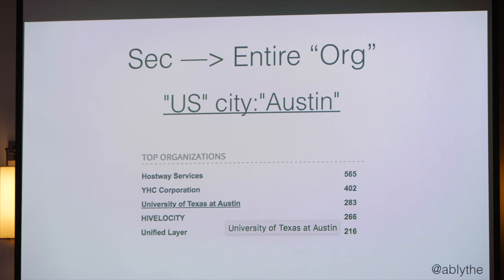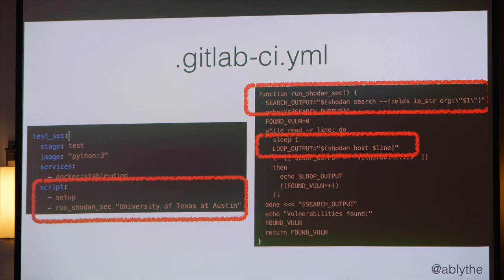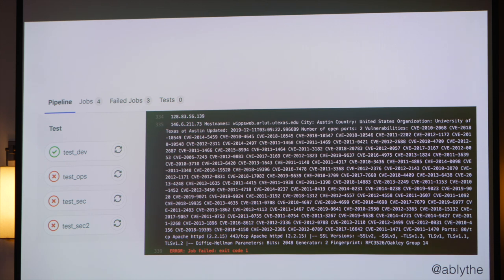First I'm going to take the security use case and think of this as though you have responsibility for the entire company or organization. We take a look at Shodan and start by doing a search on the US, then the city of Austin, and then drill down one more level to select the University of Texas at Austin. In my GitLab project, I wrote a bash function — run Shodan for Sec — where I send in the University of Texas at Austin, and it loops through and hits the API to see if there are vulnerabilities. Since we found a vulnerability, we fail the pipeline. That's the whole-company security use case.